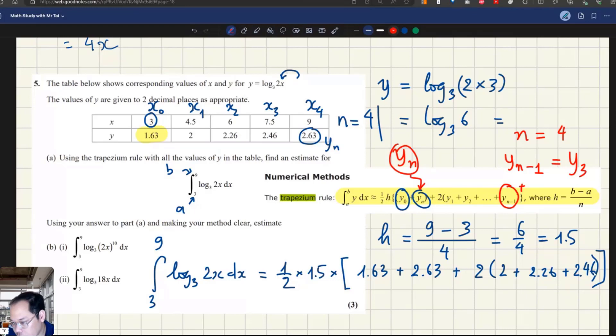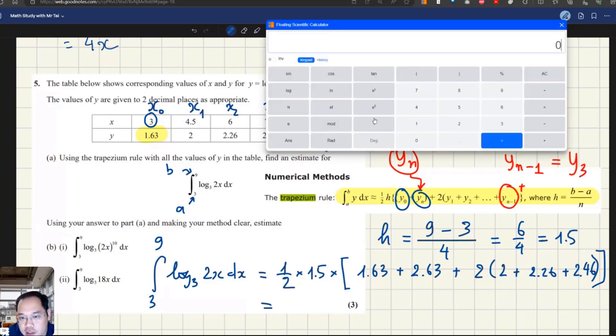The last step, we just need to use the calculator to calculate this value as follows: one half, which is 0.5, times h 1.5, and then times the bracket 1.63 plus 2.63 plus 2 times opening the bracket, another bracket, 2 plus 2.26 plus 2.46, and closing the bracket.